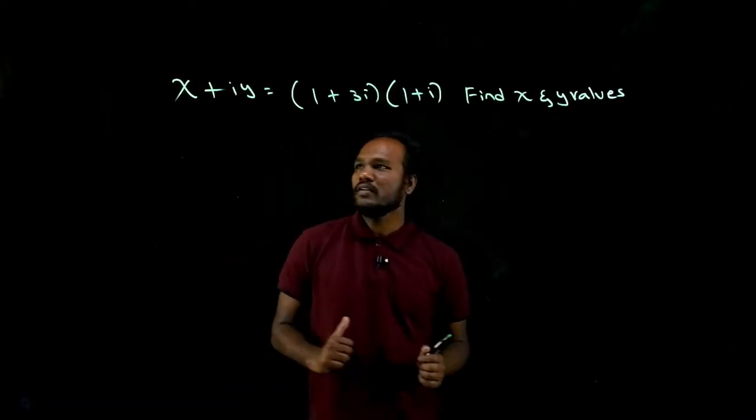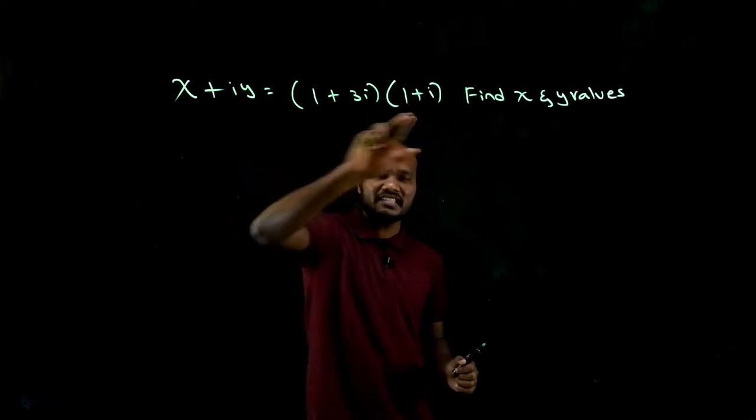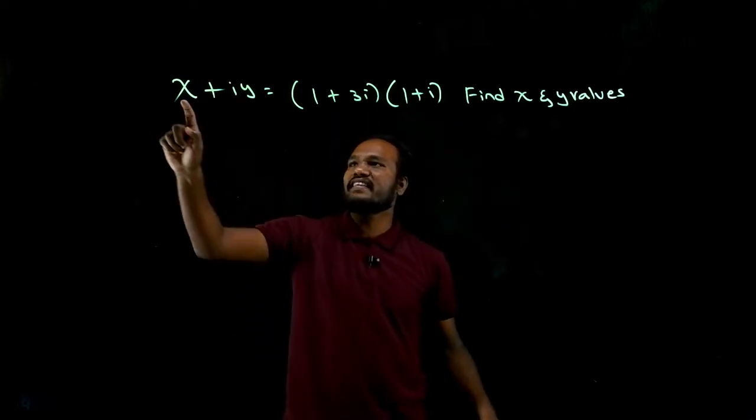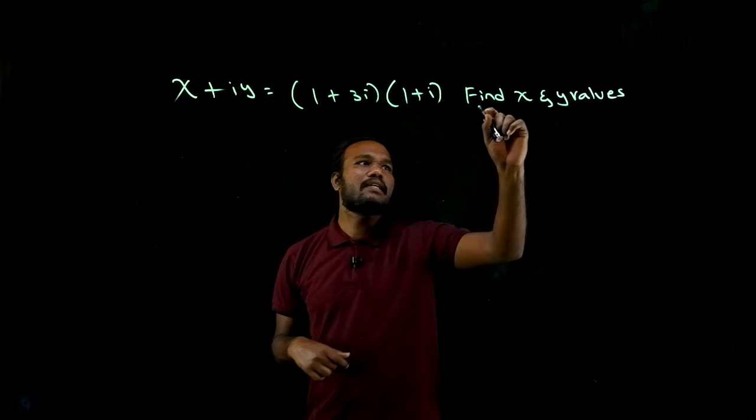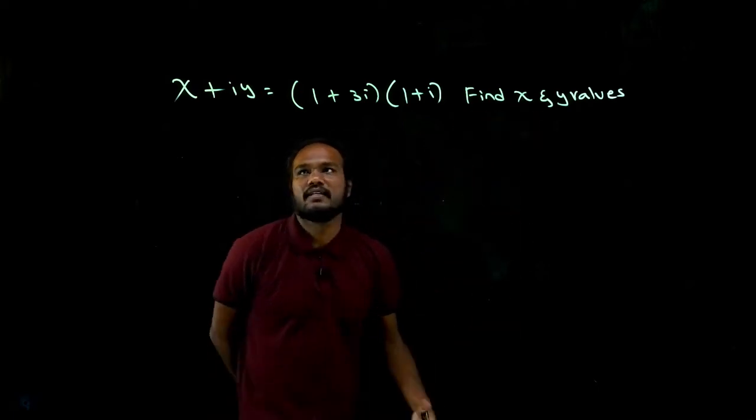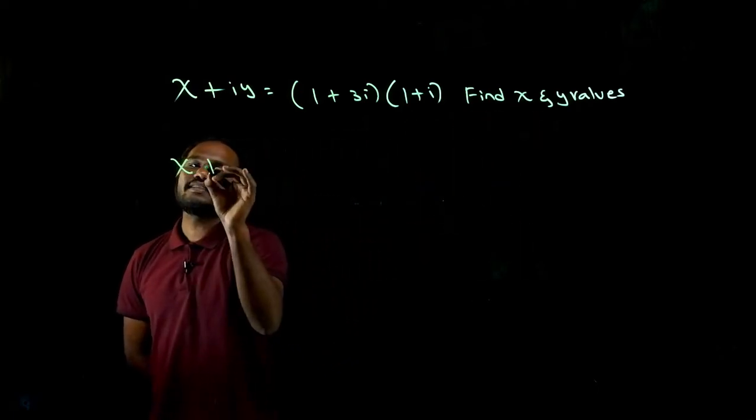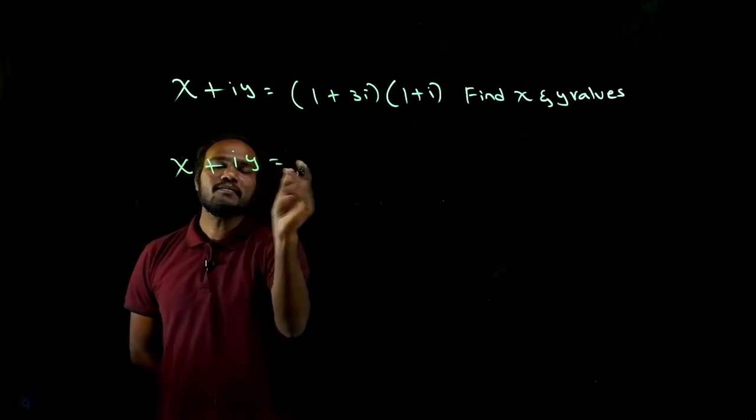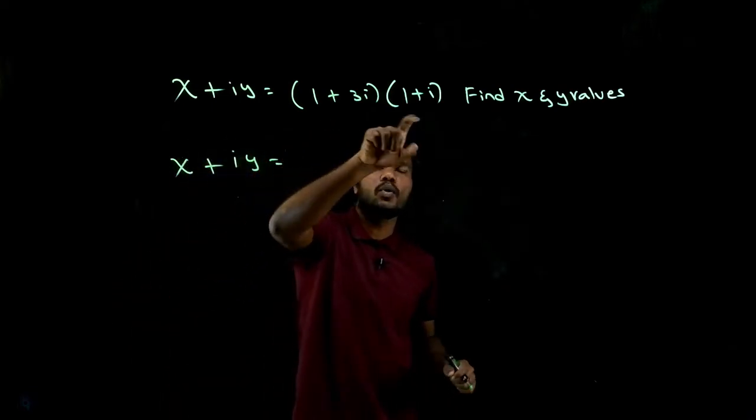Okay, what is given in the question? x plus iy is equal to (1 + 3i)(1 + i). We have to find the values of x and y. So how to do it? See, here we have x, that is a real number, plus imaginary times some number. But here we have two complex numbers.